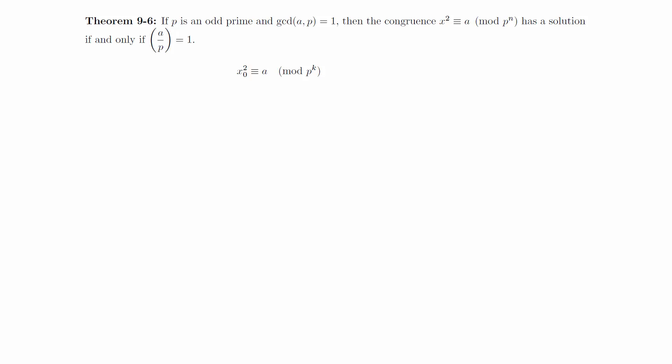Assume that x squared congruent to a modulo p^k has a solution x0. This means that x0 squared minus a equals m times p^k for some integer m. We will now generate a solution of x squared congruent to a modulo p^(k+1).